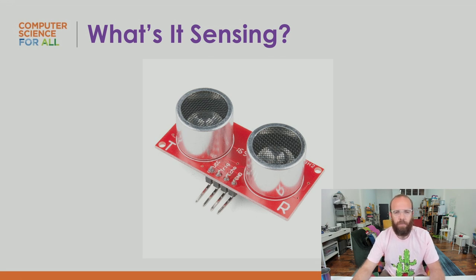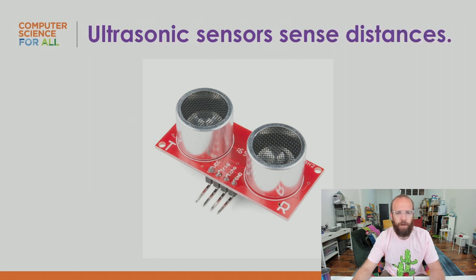This one is pretty common in educational kits — you can see where it says 'echo' and the T and R stand for transmitter and receiver. This is an ultrasonic sensor that senses distance. The transmitter sends out an ultrasonic signal, the receiver picks up the echo of that signal, and it uses that timing to detect distance. These are common in Lego robotics kits.